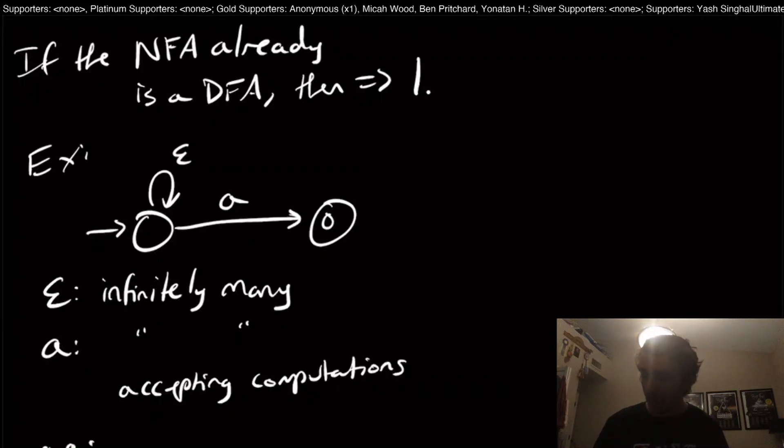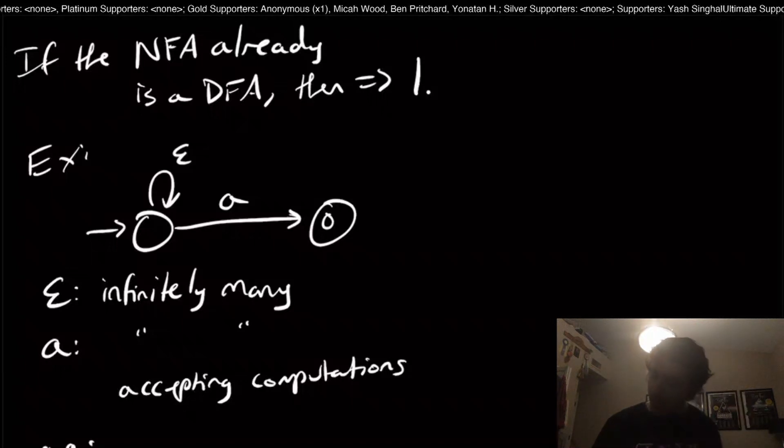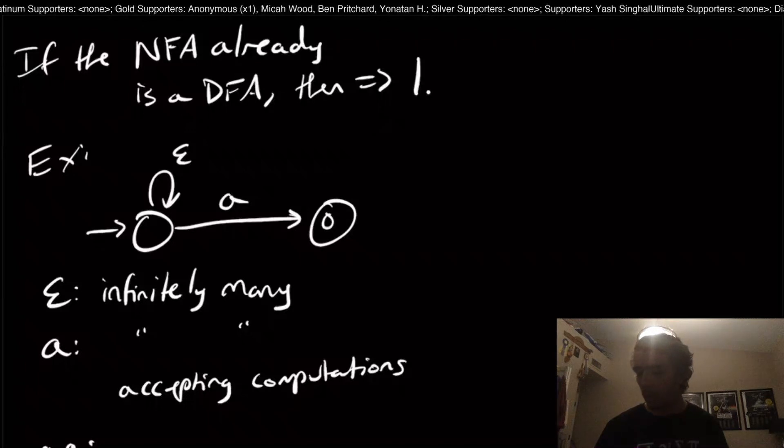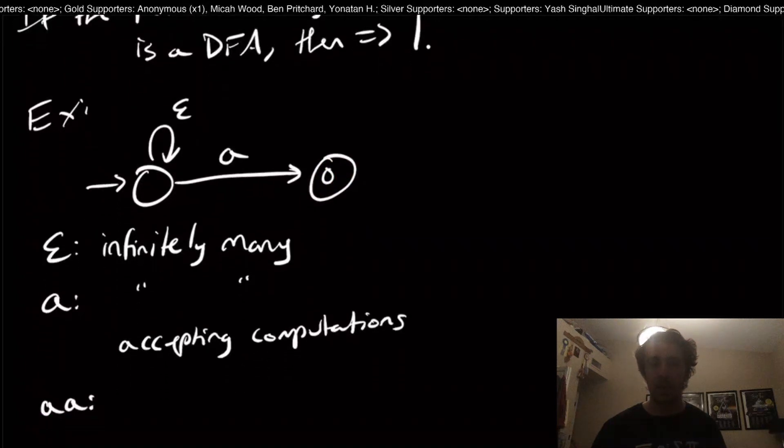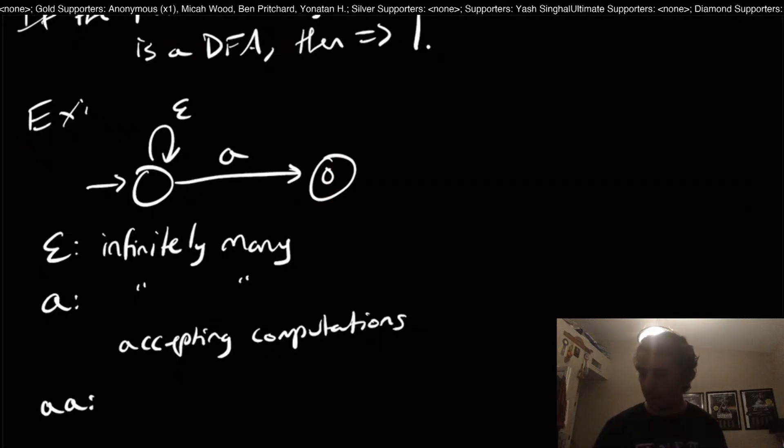But now what about the string AA? If we want to be able to read this, we've got to accept the string by reading the entire string and being in the final state. If we want to read the first character A, we have to take this transition. But now when we're in this state, we're completely stuck.